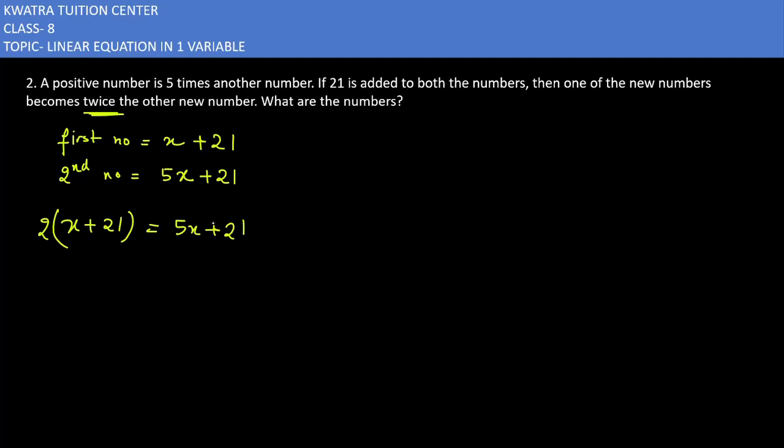So now what you can do is, you can simplify it. 2 ko x se multiply karo. 2 ko 21 se multiply karo. 42 aaye. Right side pe 5x plus 21.